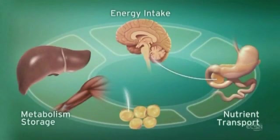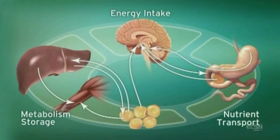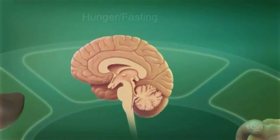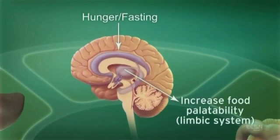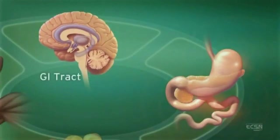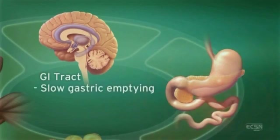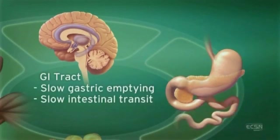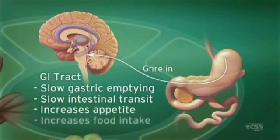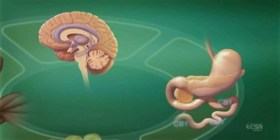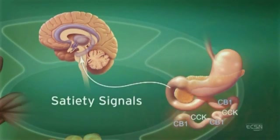Endocannabinoid system activity in the central nervous system regulates food intake. For example, ECS stimulation by hunger and fasting signals stimulates appetite and increases the palatability of food. Endocannabinoids slow gastric emptying and GI transit, and appear to stimulate secretion of ghrelin, a neuropeptide that increases appetite and food intake.